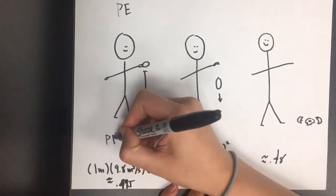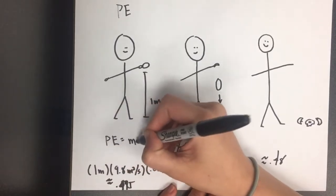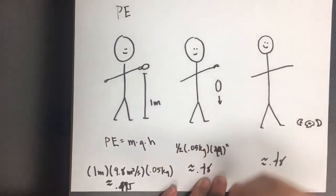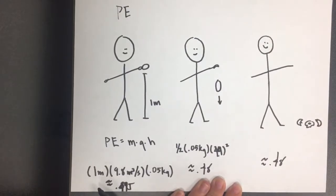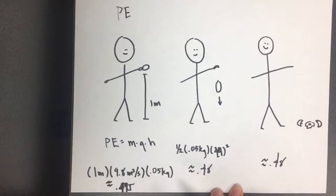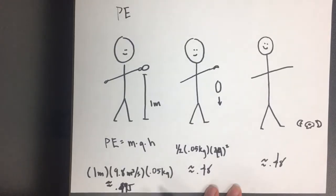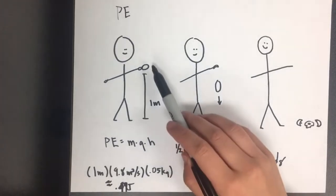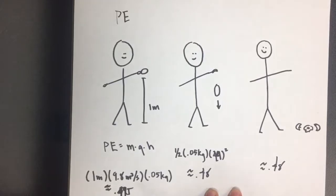Potential energy is equal to mass times gravity times height. So we're holding the egg about one meter above the surface, gravity is equal to 9.8 meters per second squared, and the mass of the egg is about 0.05 kilograms. So the potential energy associated with this step is about 0.49 joules.